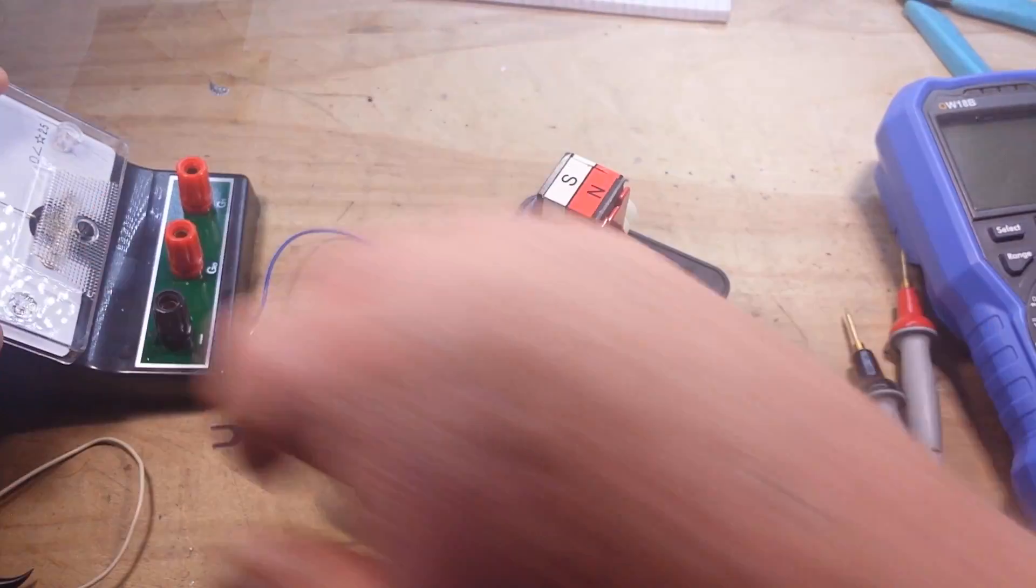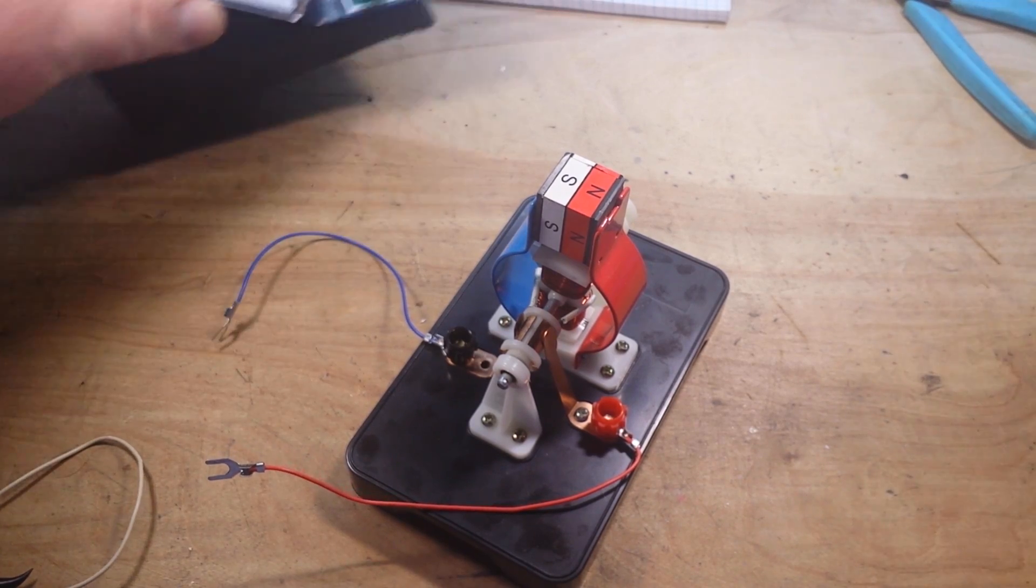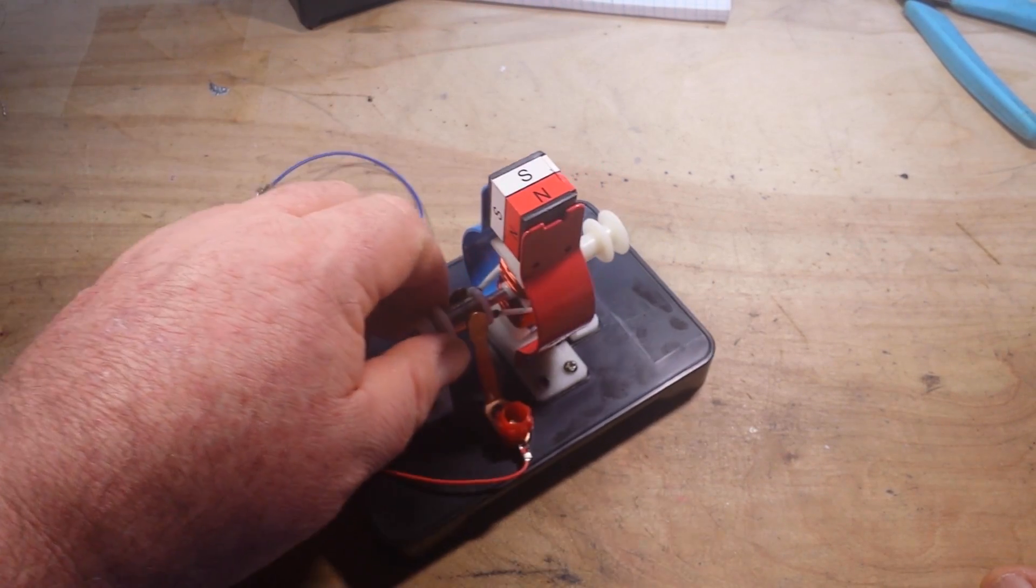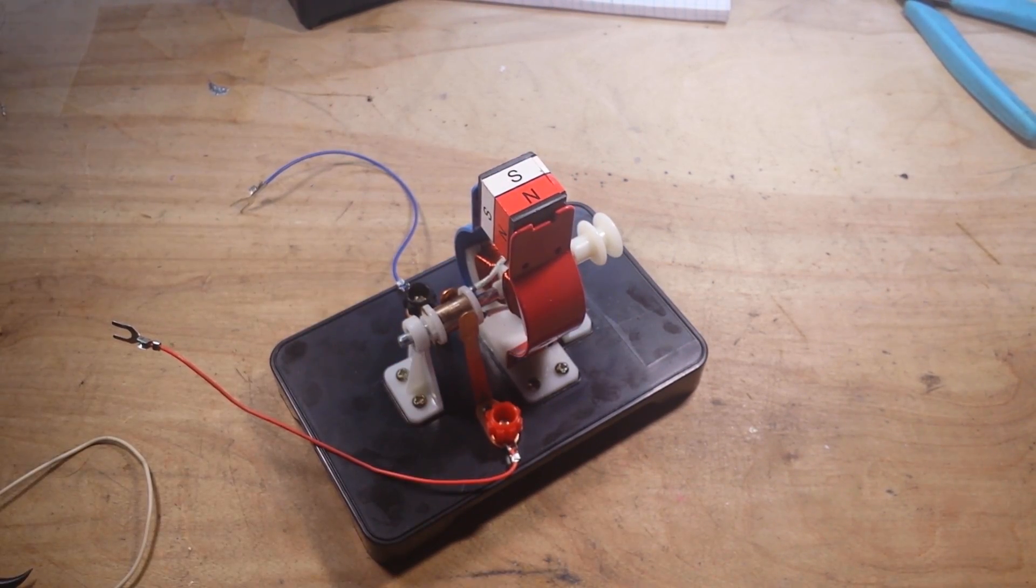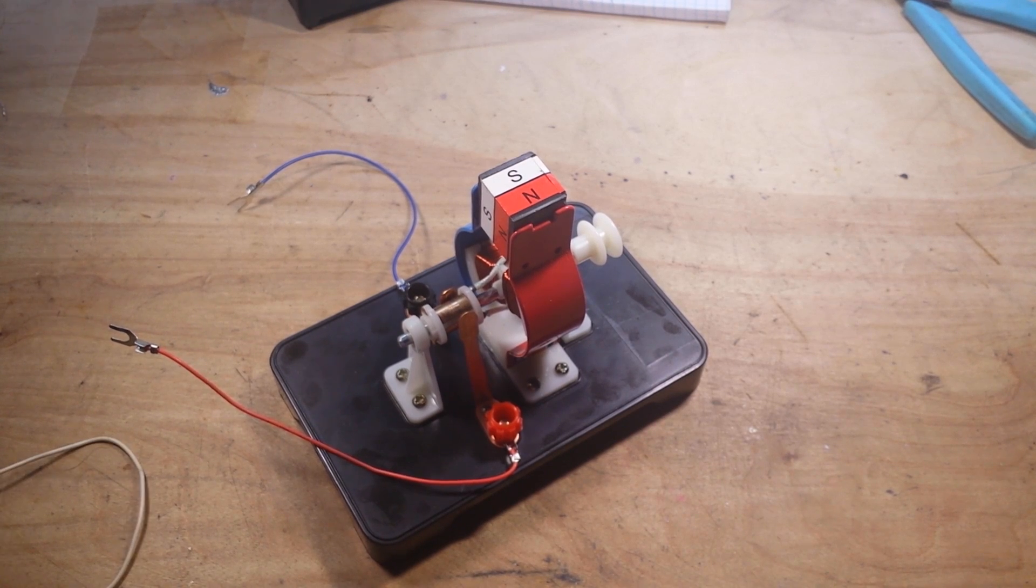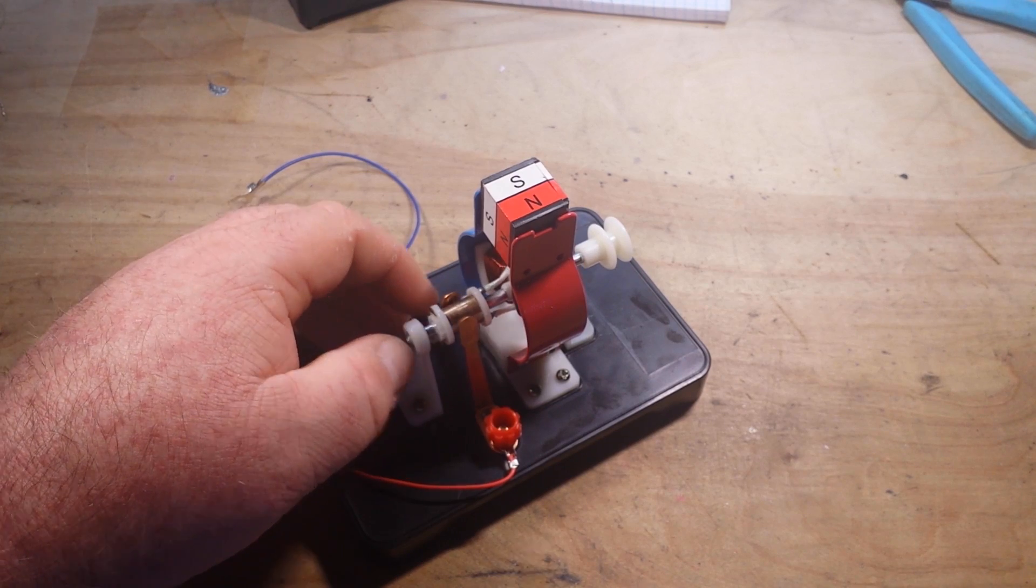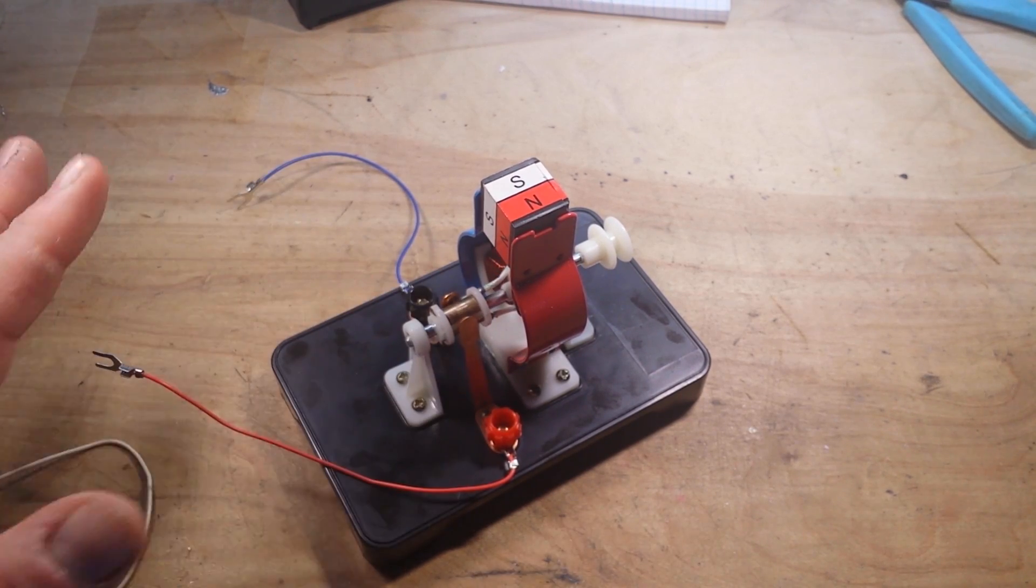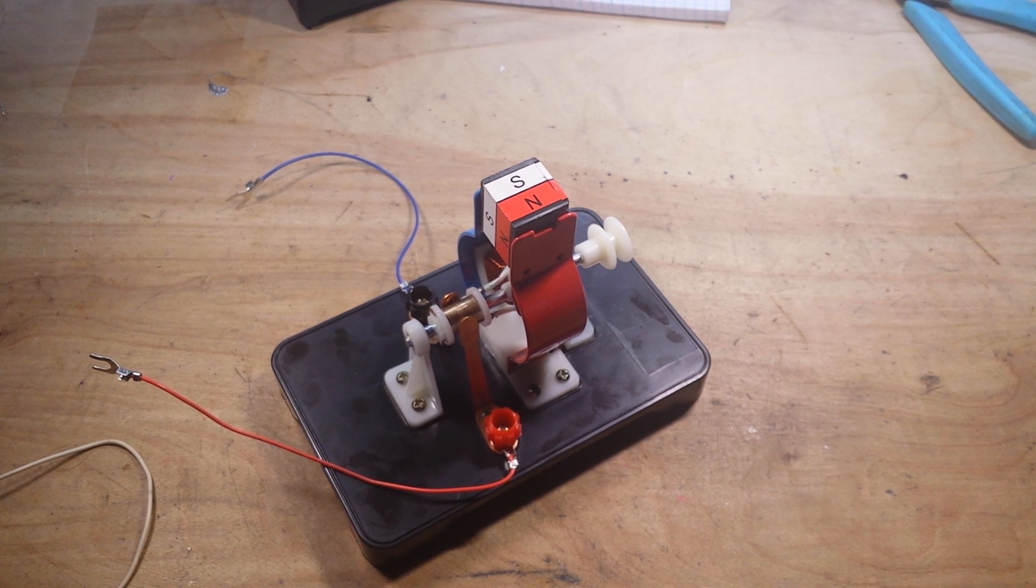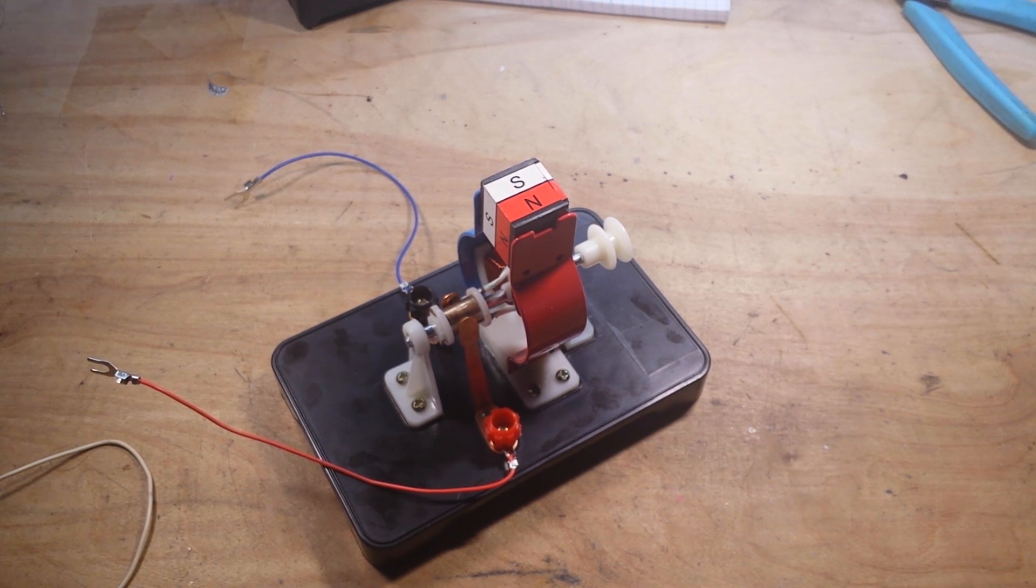Now this is called a split commutator. There is also one called a slip ring commutator where the brushes connect to the same side all the time. In that case, you will get an AC current.